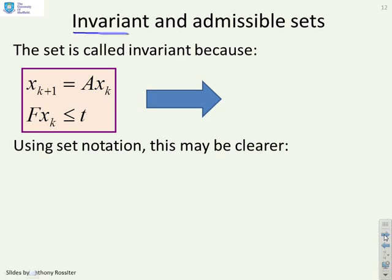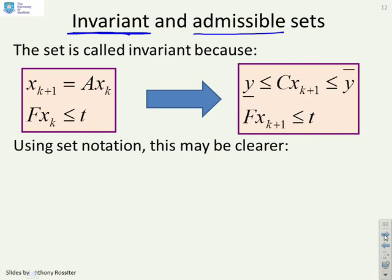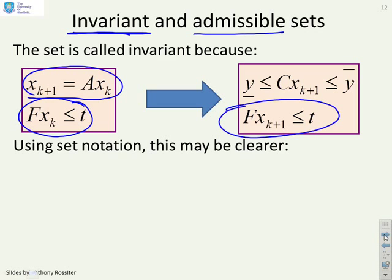OK, now what we want to do is introduce the concept of these words invariant and admissible. A set is called invariant because, in essence, what we're saying is for a given transition, xk plus 1 equals axk, and a given set of xk less than or equal to t, if you put those two together, then the next state must lie in the same set. So that's the invariance.